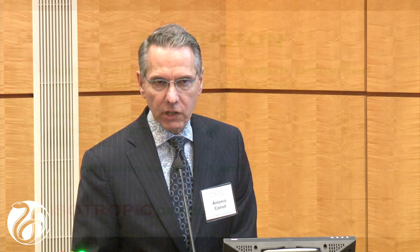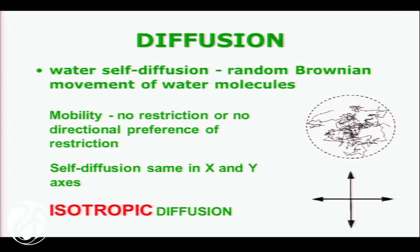If you have a water molecule in a huge vat of water, it can move in all directions equally — that's called isotropic diffusion. If you constrain the movement of water, as in a pipe, the water will move preferentially along the long axis of the pipe. Axons are basically pipes, covered by myelin, so you constrain the movement of water orthogonal to the long axis of the axon — that's called anisotropic diffusion. You can measure that in the magnet and create a map of anisotropy.